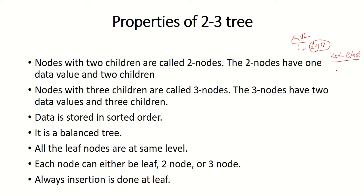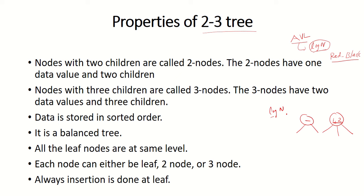Your 2-3 tree is also a height balanced tree. In 2-3 tree, every node will have two children or sometimes three children. If a node has only two children, the number of key points will be only one. If a node has three children, you will have two key points. All the leaves will be on the same level. When you want to insert a node, you will always insert only in the leaf nodes, and the data inside each node will be in sorted order. The complexity of insertion, deletion, and searching is log n because it is a height balanced tree.